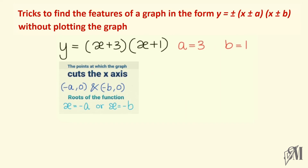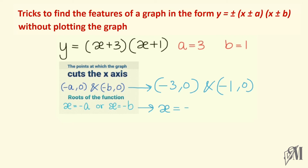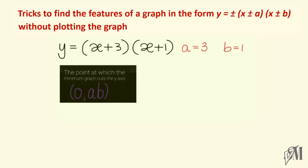Now let's see how to find out the points at which the graph cuts the x-axis. Here minus a is (minus 3, 0) and minus b is (minus 1, 0), so these two points are where the graph cuts the x-axis, giving roots x equals minus 3 and x equals minus 1. The point at which the minimum graph cuts the y-axis is (0, a times b), which is 0 comma 3 times 1 equals (0, 3).